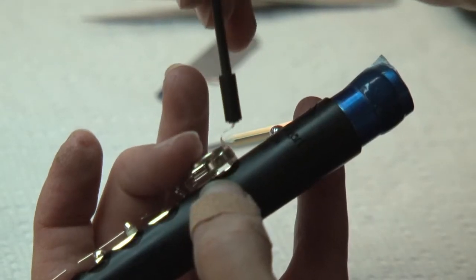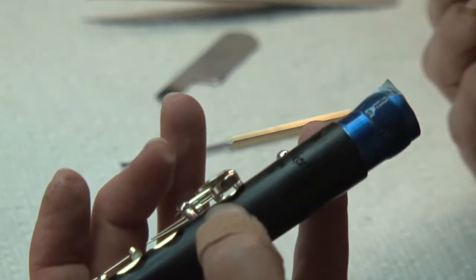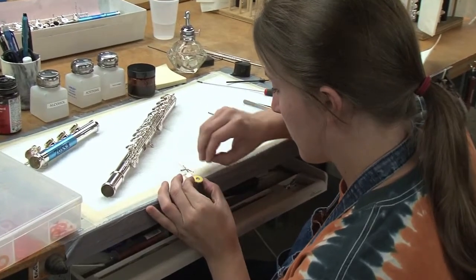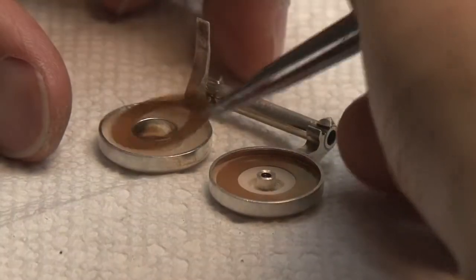I use a very narrow feeler gauge to check and adjust for a great seal. Various shims are placed in the flute key cup, which will allow for adjustments to the pads.